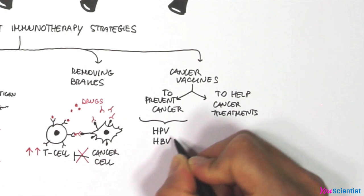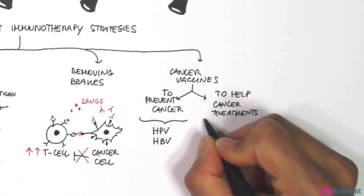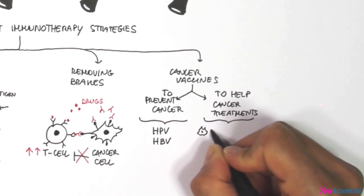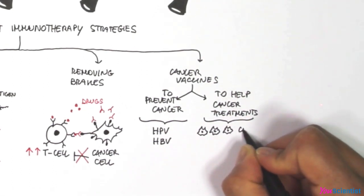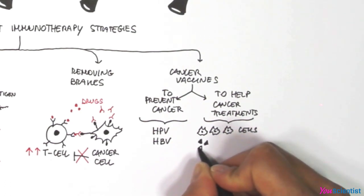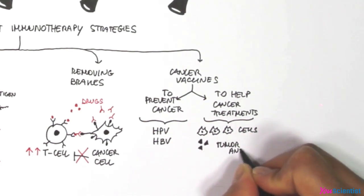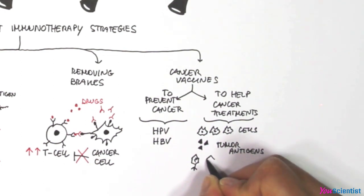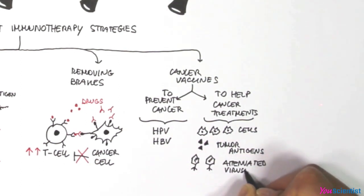For instance, vaccines against human papillomavirus help in preventing cervical cancers. In the other case, the idea is to stimulate the immune system to attack cancer cells. Cancer vaccination can be done by infusing into patients modified cells, tumor antigens, or attenuated viruses in order to elicit an immune response.